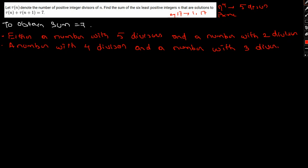A number with four divisors would be a cube of any prime number, so n³ where n is prime. Three divisors means the square of any prime number, so n² where n is prime.